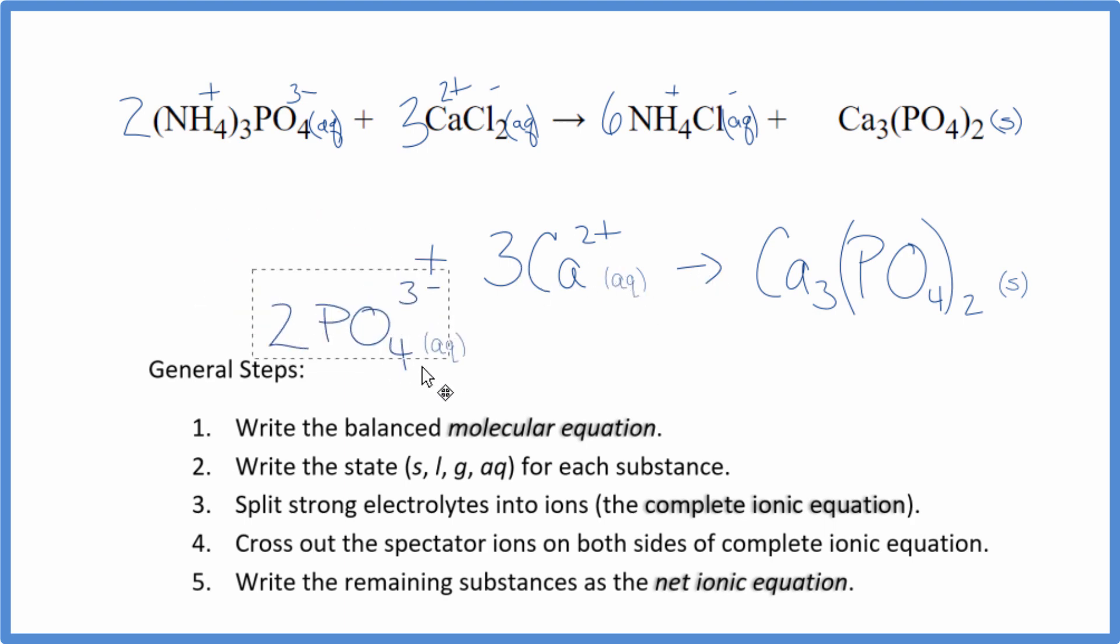Often we'll see the positive ion here first, but it doesn't really matter. It's still the same equation. Just looks a little nicer, I guess. So that's it. That's the net ionic equation for ammonium phosphate plus calcium chloride. This is Dr. B. And thanks for watching.